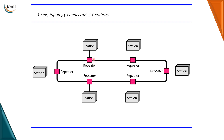Now what is the purpose of this repeater? Whenever one station sends data to another station in a ring in a unidirectional manner, the strength of the signal may get degenerated. So every station incorporates a repeater, and the purpose of a repeater is to regenerate the strength of the signal to its original value.